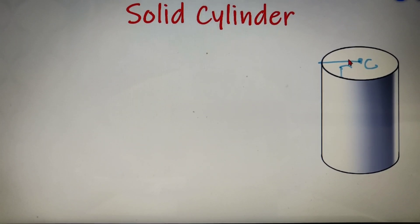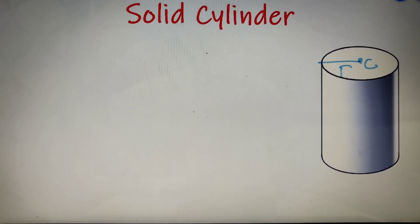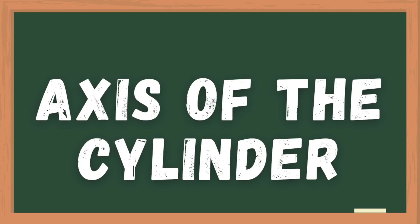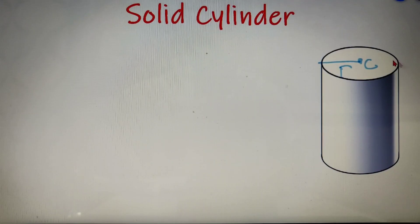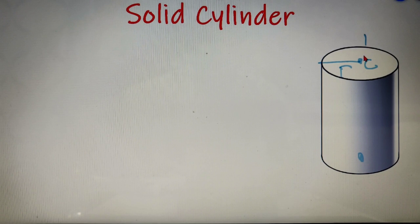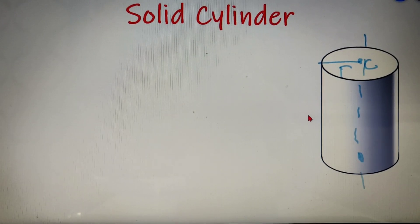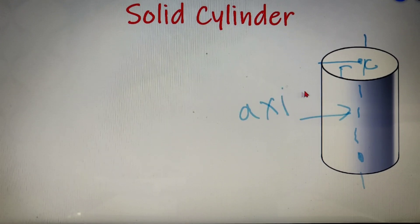A cylinder has two circular cross-sections — one at the top and one at the bottom — and these are also called the bases of the solid cylinder. If I join the centers of both cross-sectional bases, the straight line passing through these two centers is called the axis of the solid cylinder.